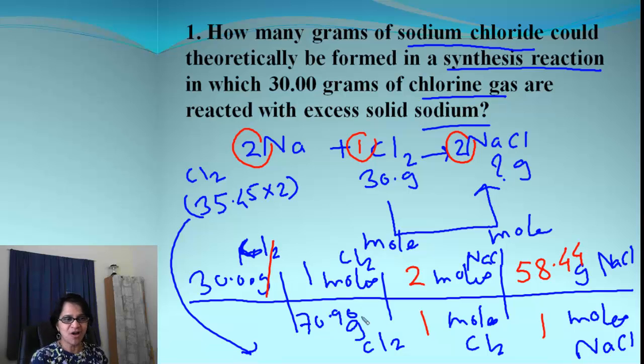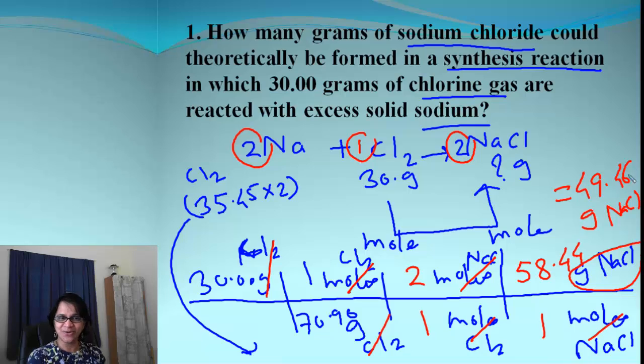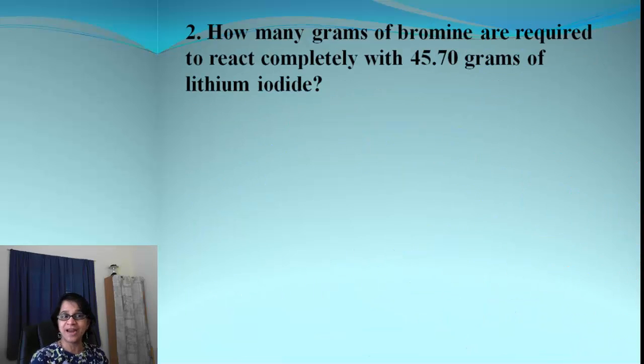And over here it is the molar mass of sodium chloride. So we get 58.44 grams. When we solve the problem and we end up getting the answer in sodium chloride, the final answer is 49.46 grams of NaCl. So that was easy, right? Let's move on to our next problem.